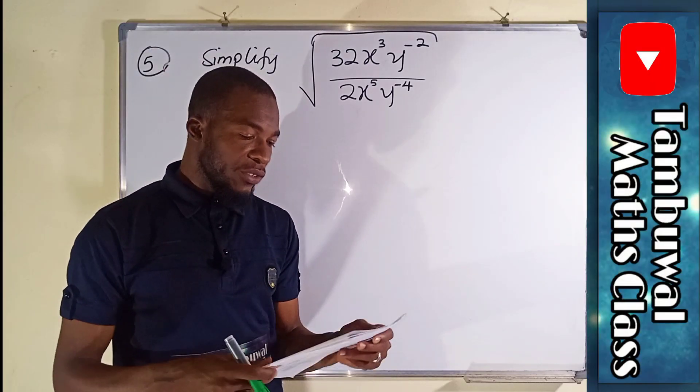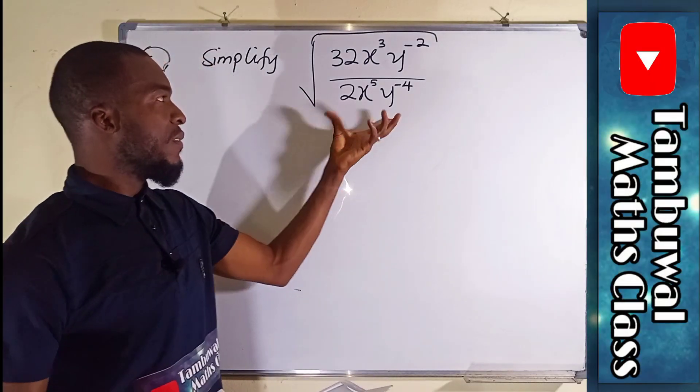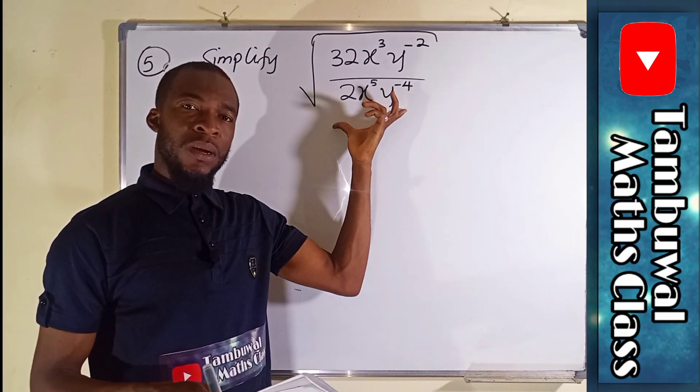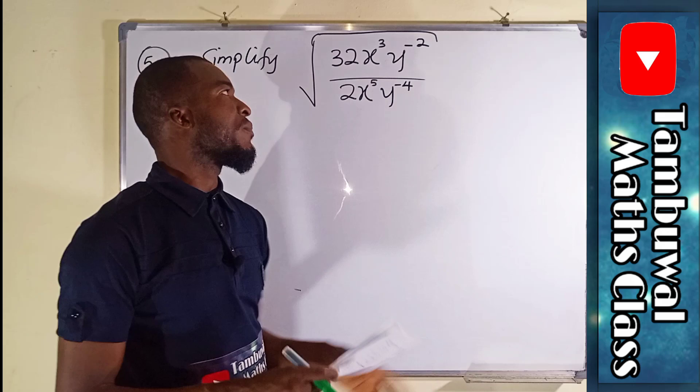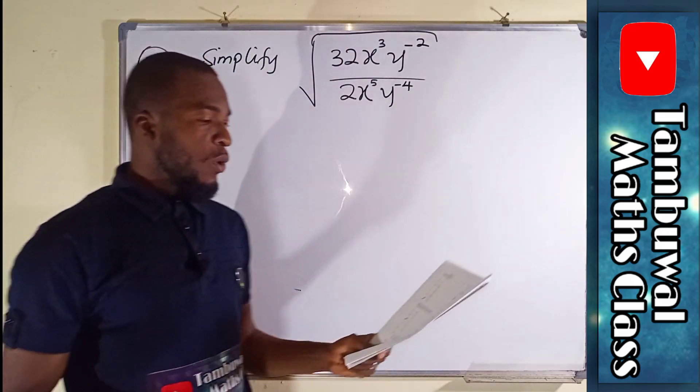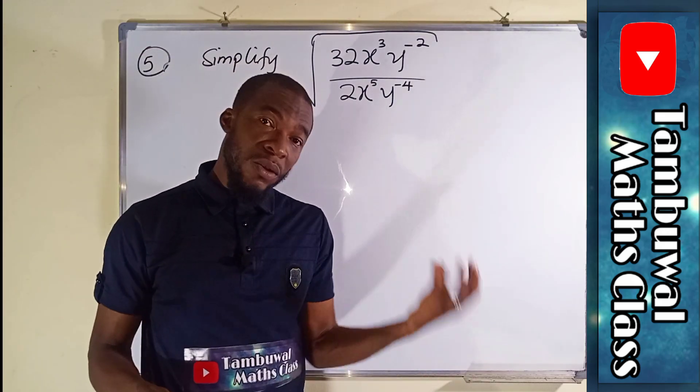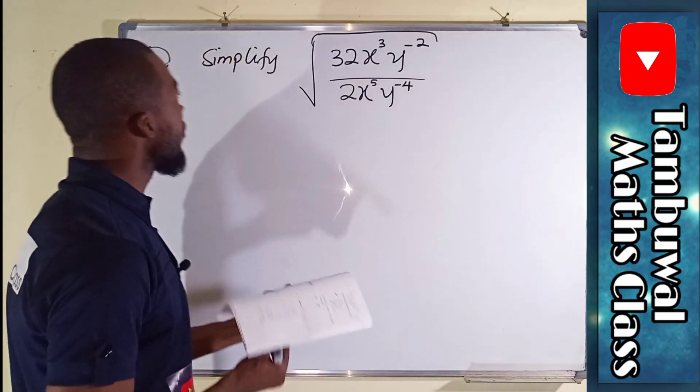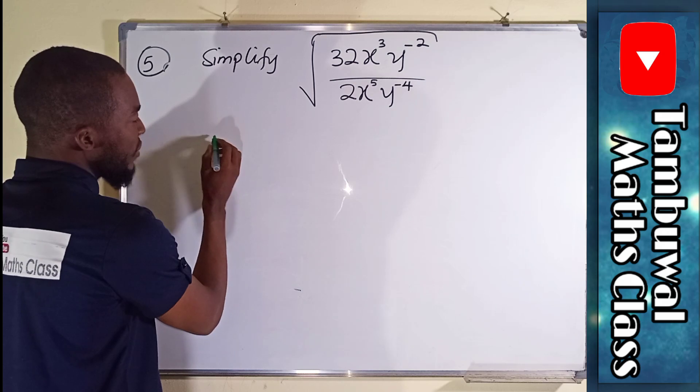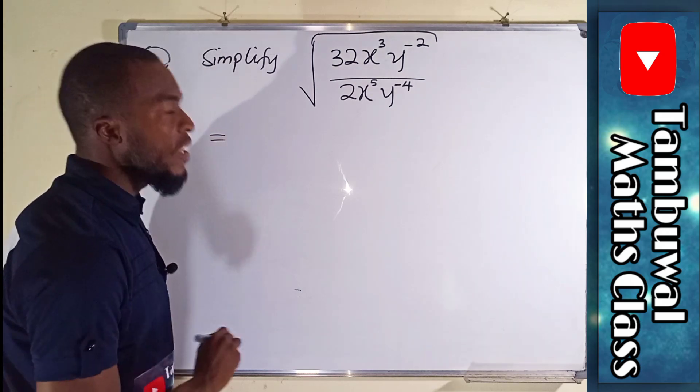Question number five asks us to simplify this expression. We are going to apply laws of indices to deal with this question. Normally what I tell my students is to relate numbers by numbers and letters by letters and separate the square root.